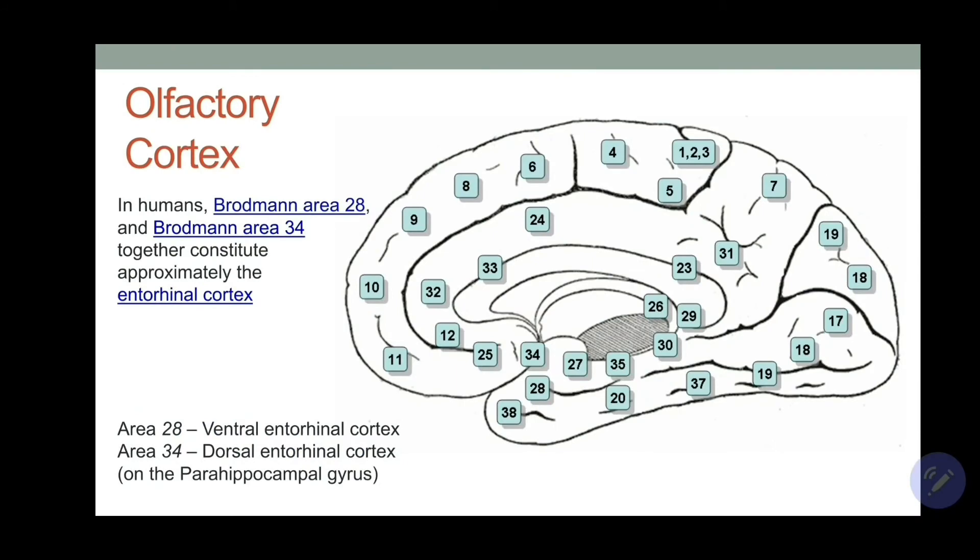Look here, in humans, Brodmann's area number 28 and Brodmann's area number 34 together constitute approximately the entorhinal cortex. Basically, some authors might have given you different information and you will become confused, because some authors say it's 28, some have written it's 34. So let me tell you a better way to understand. The entorhinal area, as I told you, was including uncus plus the anterior portion of the parahippocampal gyrus.